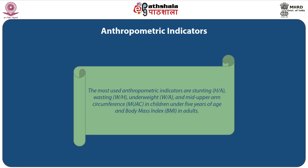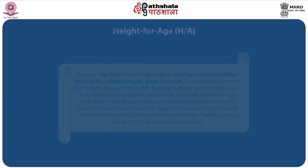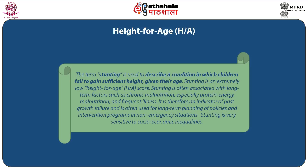The most used anthropometric indicators are stunting, wasting, underweight, and mid-upper arm circumference in children under 5 years of age, and body mass index in adults. Stunting describes a condition in which children fail to gain sufficient height given their age — it is an extremely low height-for-age score. Stunting is often associated with long-term factors such as chronic malnutrition, especially protein-energy malnutrition and frequent illness. It is an indicator of past growth failure and is often used for long-term planning of policies and programs in non-emergency situations. Stunting is very sensitive to socioeconomic inequalities.